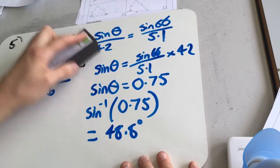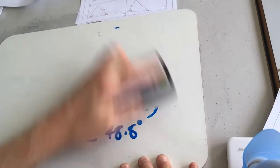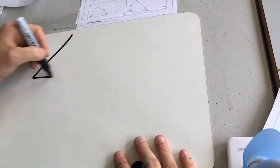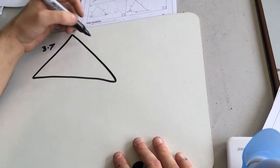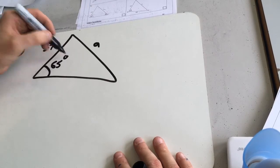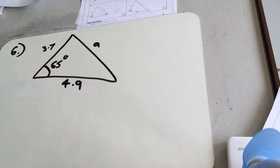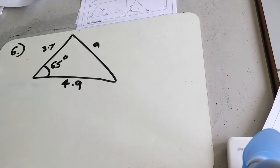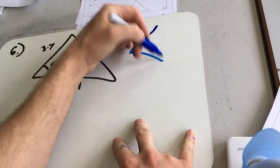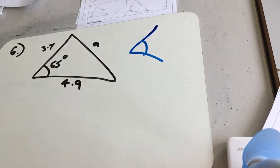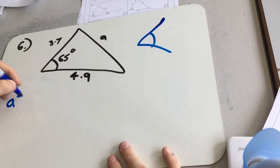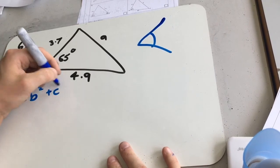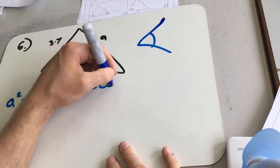Okay, last one now. So we've got 3.7, we've got A, we've got 65 degrees, and we've got 4.9. So this time it's going to be a cosine rule. I know it's cosine rule because cosine rule is always when you have an angle and two sides next to it, which is what we have here. So the equation says A squared equals B squared plus C squared minus 2BC cos A.